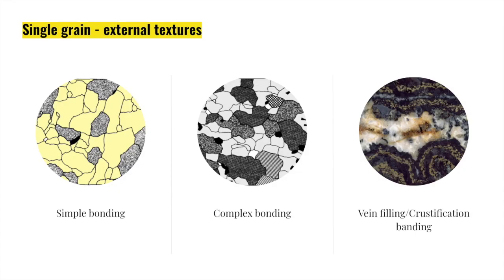Another way of looking at single grain external textures is in terms of simple and complex bonding. The texture that results from simple bonding is equigranular texture, which indicates slow growth with no preferential direction. Smooth intergrain contact characterizes the equigranular texture. On the other hand, complex bonding is a descriptive term that covers virtually all crystal bonding textures and gives rise to numerous textural subtypes that we are going to see in the coming slides.